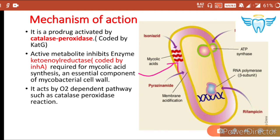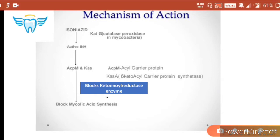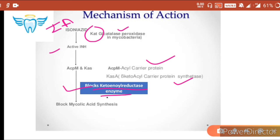As you can see, this is the cell wall of mycobacteria, and in this cell wall we have mycolic acid. Isoniazid works on these mycolic acid structures by inhibiting keto-enol reductase enzyme, acting through an oxygen-dependent pathway via the catalase peroxidase reaction. Isoniazid is a prodrug in inactive form; it gets activated by catalase peroxidase coded as katG, then produces two carrier proteins — acyl carrier protein and beta-keto acyl carrier protein — and blocks keto-enol reductase, thereby blocking mycolic acid synthesis.